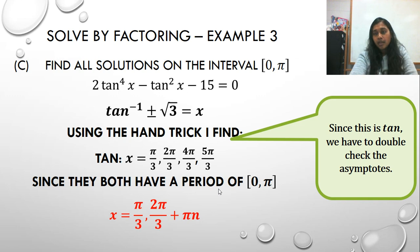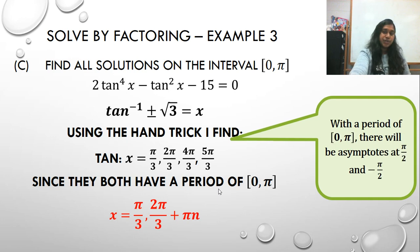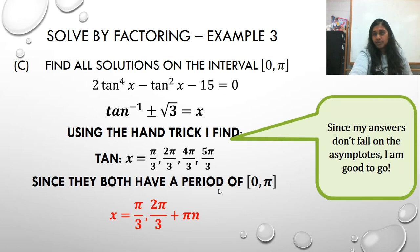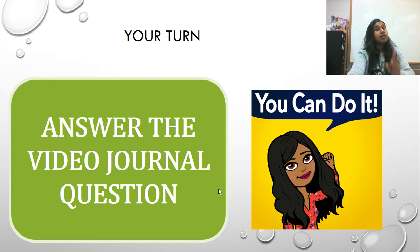All right. We also have to check our asymptotes occurring at pi over 2 and negative pi over 2 on that standard value. Since none of my answers occur there, I don't reject those. Okay? All righty. Here is your turn.